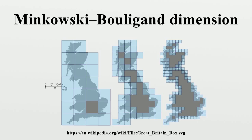While N, N-covering, and N-packing are not exactly identical, they are closely related, and give rise to identical definitions of the upper and lower box dimensions. This is easy to prove once the following inequalities are proven, which in turn follow with a little effort from the triangle inequality.